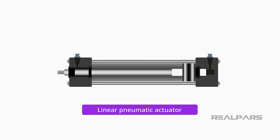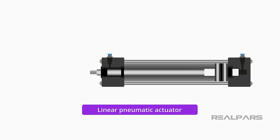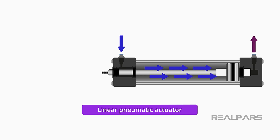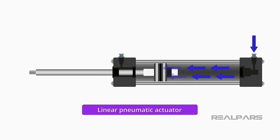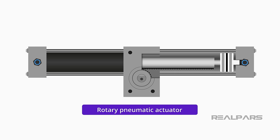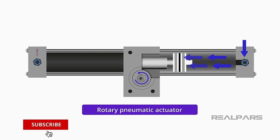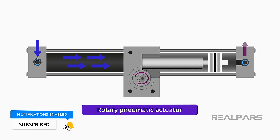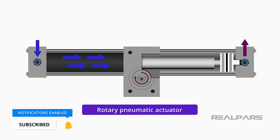A linear pneumatic actuator can move something in a straight line. For example, a rod is moved in and out of a cylinder in a linear motion by a pneumatic energy source. A rotary pneumatic actuator can make something move in a circular motion — for example, a rod in a rack and pinion drive system is used to produce rotary motion.